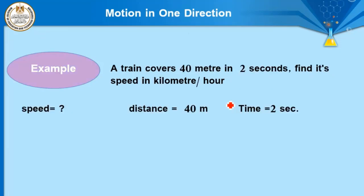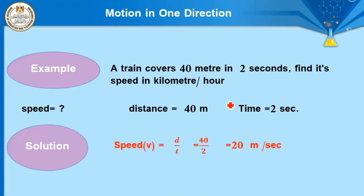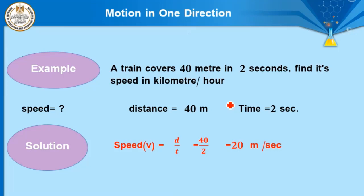Example number two: a train covers 40 meters in 2 seconds. Find its speed in kilometers per hour. Given: distance = 40 m, time = 2 s, speed is unknown. Law: speed = distance ÷ time = 40 ÷ 2 = 20 meters per second. But the example asks for speed in kilometers per hour, so we must convert. Multiply by 18/5: 20 × (18/5) = 72 kilometers per hour.